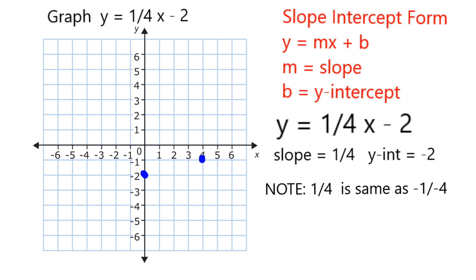Now, I can't fit any more points going to the right and up, so what I'm going to do is go in the other direction. You'll note that 1 fourth is exactly the same thing as negative 1 over negative 4. So I can also go down 1 and back 1, 2, 3, 4. And that's also going to be on the same line.